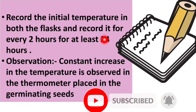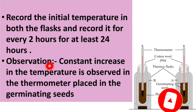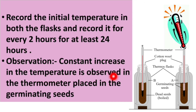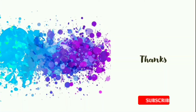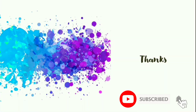Observation: A constant temperature increase is observed in the thermometer placed in the germinating seeds flask. The thermometer placed in the germinating seeds shows a higher temperature compared to the one placed in the dry seeds, demonstrating that heat is evolved during respiration.